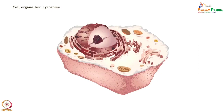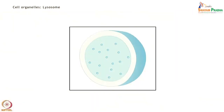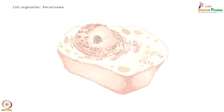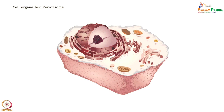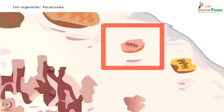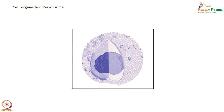Lysosomes are found exclusively in animal cells for degrading intracellular debris; they contain hydrolytic enzymes within sacs that digest and degrade unwanted material. Peroxisomes contain enzymes like catalase that protect the cell against free radicals and peroxides, play a role in metabolism of very long chain fatty acids, have a single membrane, and no independent genetic system.